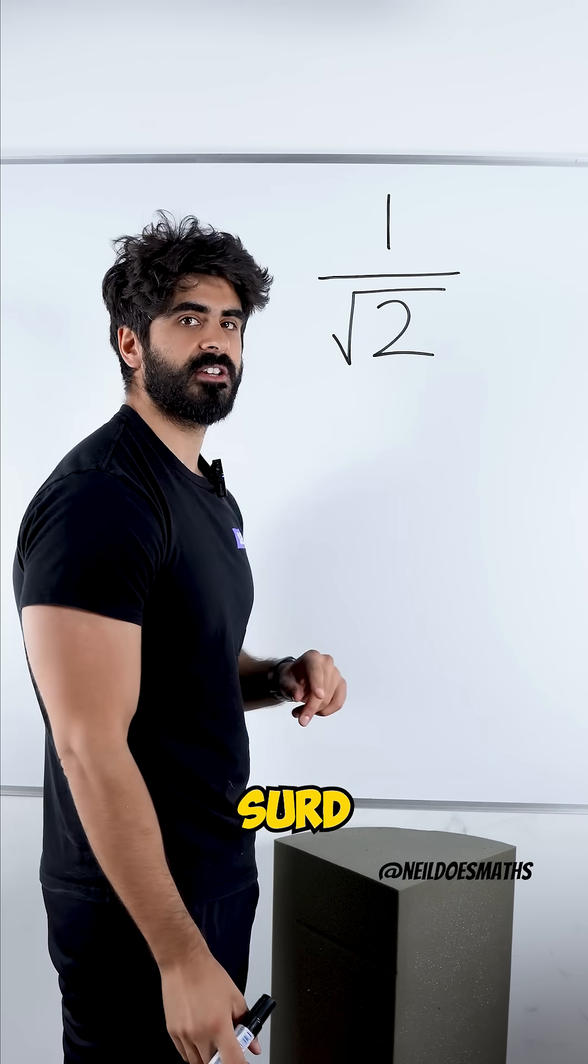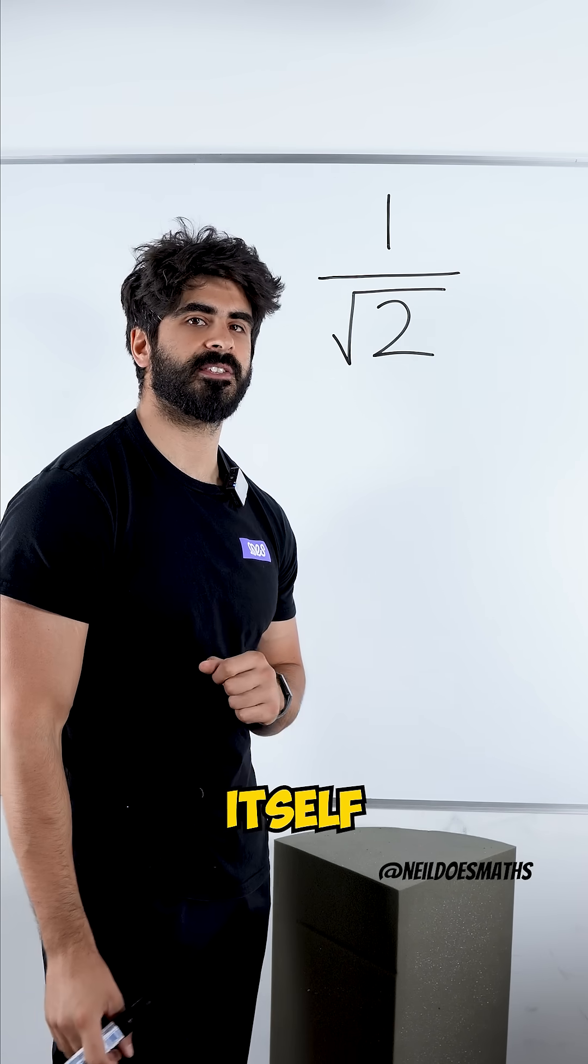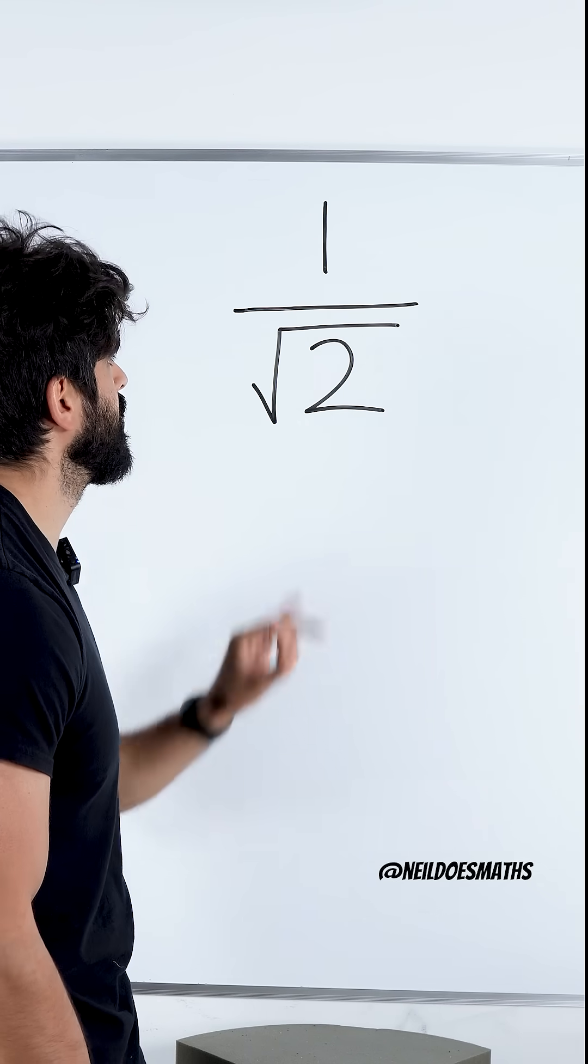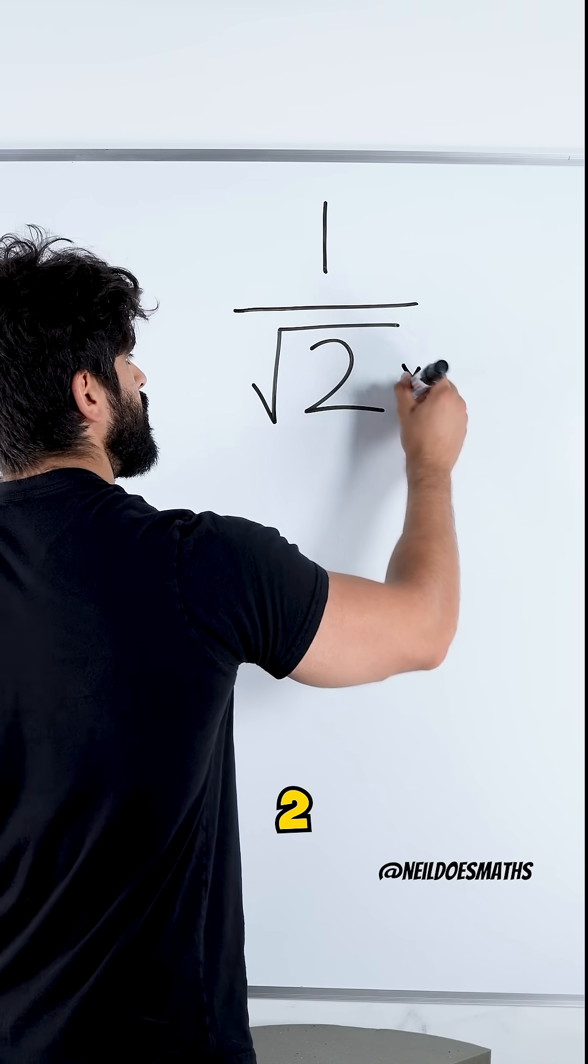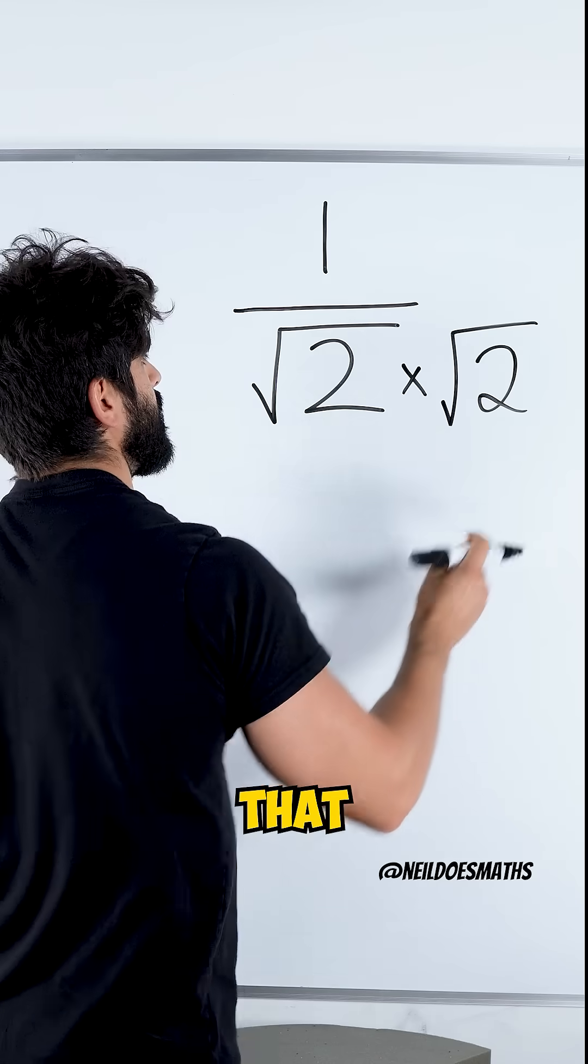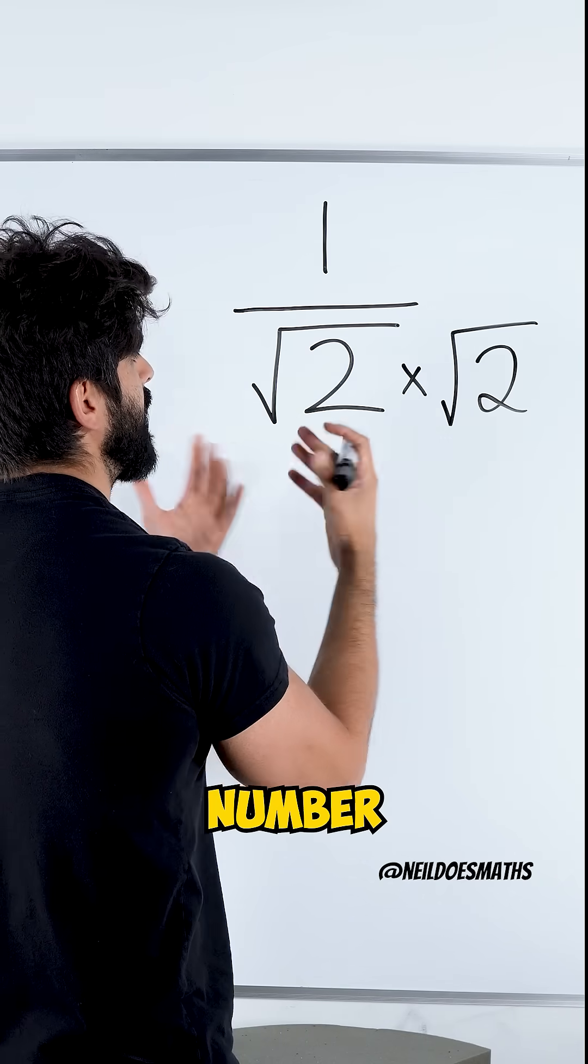But what I can do is think, all right, to get rid of this surd, I do need to multiply this number by itself. I need to square it, but just the denominator. If I multiply root two by itself, that would mean to square the number, and the root would disappear.